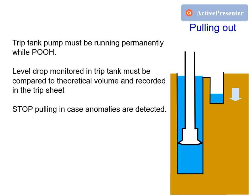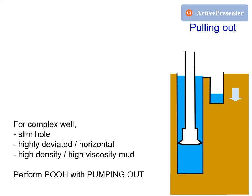Stop pulling in case anomalies are detected. For any complex well — slim hole configurations, highly deviated or horizontal wells, or any well using high-density or high-viscosity mud — it is best to perform pulling out of hole with pumping out.